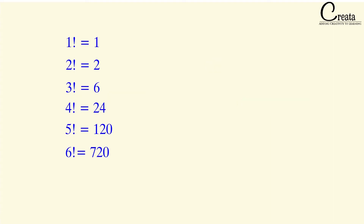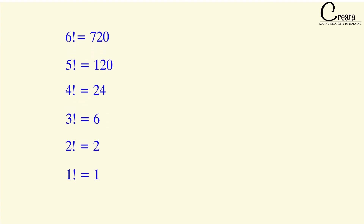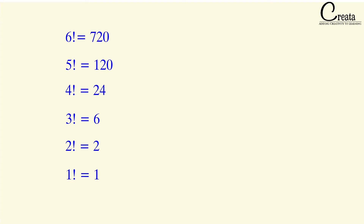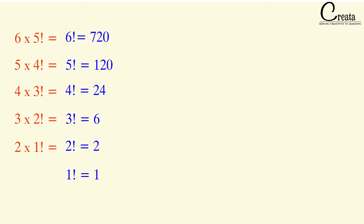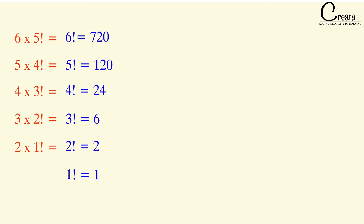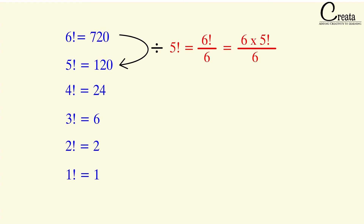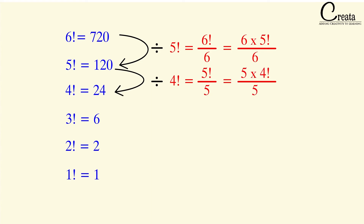These are all the values of 1 factorial to 6 factorial. Let's rearrange them in reverse order. We calculated factorial by multiplying the number with the factorial of the previous number. In the reverse order, we can calculate factorial using division. We can calculate 5 factorial by dividing 6 factorial by 6. Since 6 factorial is 6 into 5 factorial, if we divide 6 factorial by 6, we get 5 factorial. Similarly, dividing 5 factorial by 5 gives us 4 factorial.